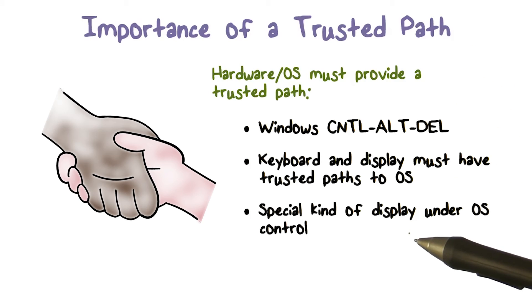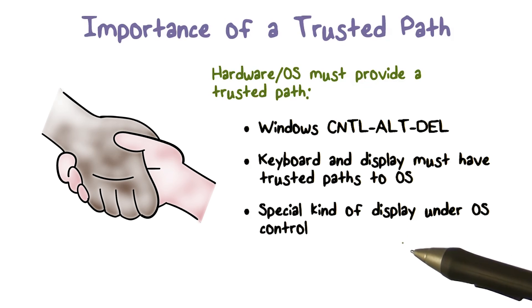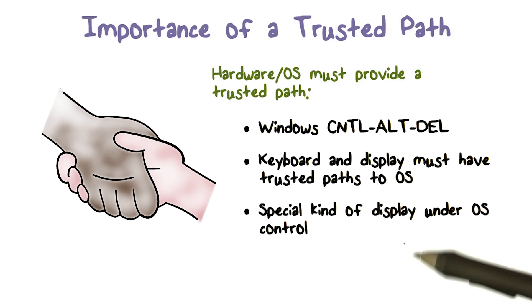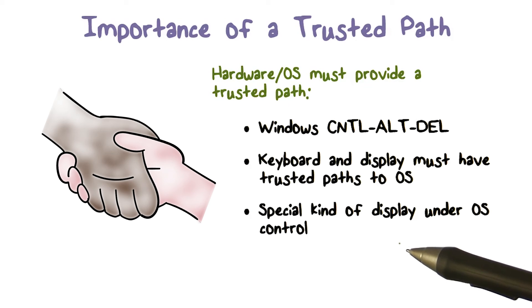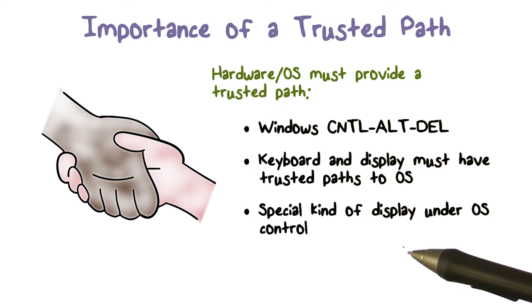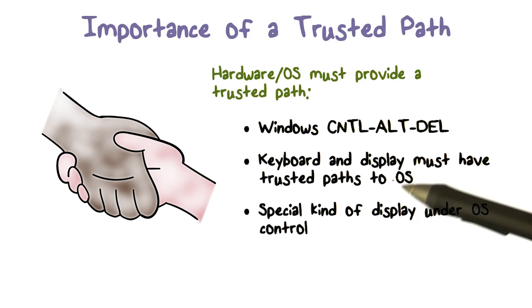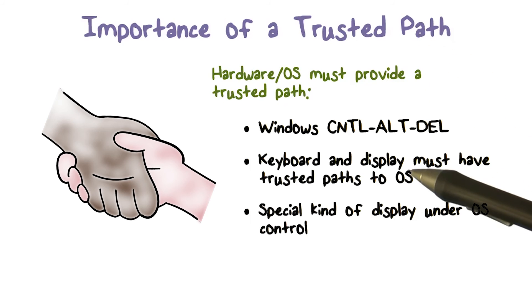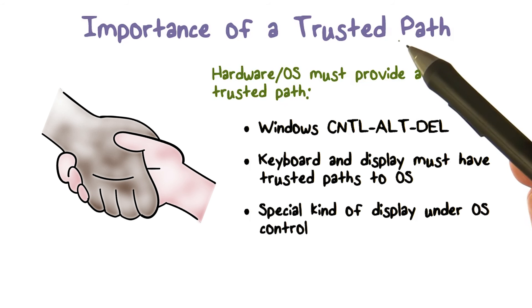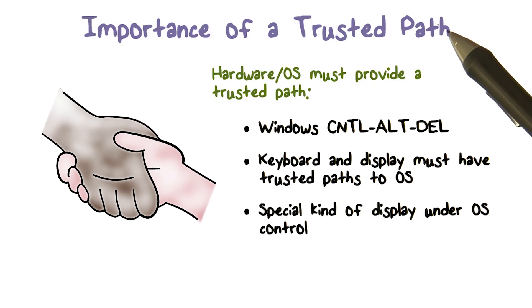They said there's a special part of the display that only the operating system can write. For example, you could indicate on the display when you're talking to the operating system and when you're not, or actually have a light on the keyboard that lights up when you're talking to the operating system and is off when you're not. This way, the user would know that when providing their password, it is going over a trusted path to the operating system.